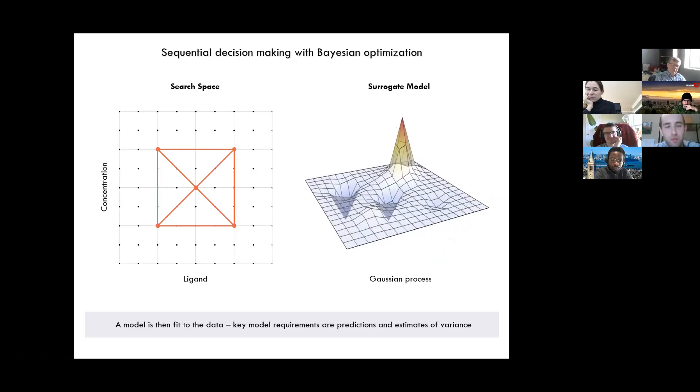So next, once we have some data, the model is fit to the data. And key requirements of the model or surrogate model in Bayesian optimization are the ability to make predictions and estimate variance. And the kind of model that we use as the preset model in Bayesian optimization is called a Gaussian process, which is a stochastic model that has some very desirable statistical properties that make it very effective.